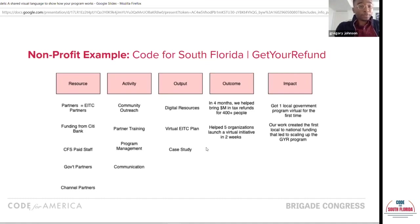On the resource side, there are organizations called EITC Partners — Earned Income Tax Credit Partners — that offer assistance, and they had to move from in-person to virtual. They were the top resource we thought about reaching. We also needed funding — we put in funding from Citibank, our main funder — plus paid staff from my team, government employees from the city of Miami's tax program that had been running for 20 to 30 plus years, and channel partners to help bring the message.